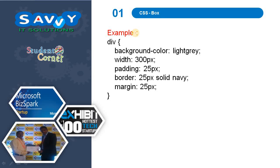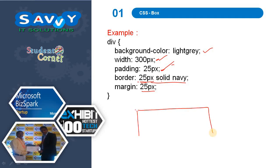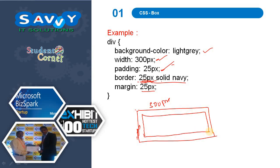Now let us look at a small example. The background color is light gray, width is 300px, and padding is 25px. The border is 25px solid navy, and the margin is 25px. So the width of the content area is 300px, and the border is 25px on all sides with solid navy color.